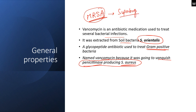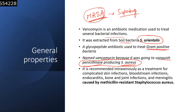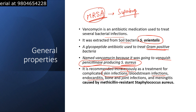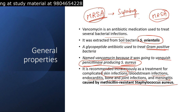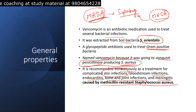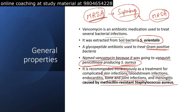Superbugs are bacteria like MRSA that are resistant against most of the antibiotics available right now. We need to resort to vancomycin and some combination of other medications to ultimately kill them. Vancomycin is recommended intravenously for complicated skin infections, gangrene, bloodstream infections, endocarditis, bone and joint infections, and meningitis caused by methicillin-resistant Staphylococcus aureus — MRSA, also called multi-drug resistant Staphylococcus aureus.